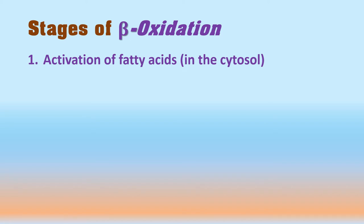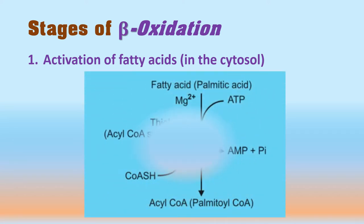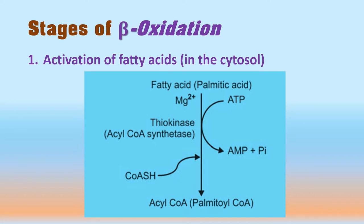During the first stage of beta oxidation — activation of the fatty acid — occurring in the cytosol, the fatty acid is converted into fatty acyl-CoA. For example, palmitic acid is converted into palmityl-CoA. This step requires thiokinase or acyl-CoA synthetase activity, and magnesium and CoA are also required.